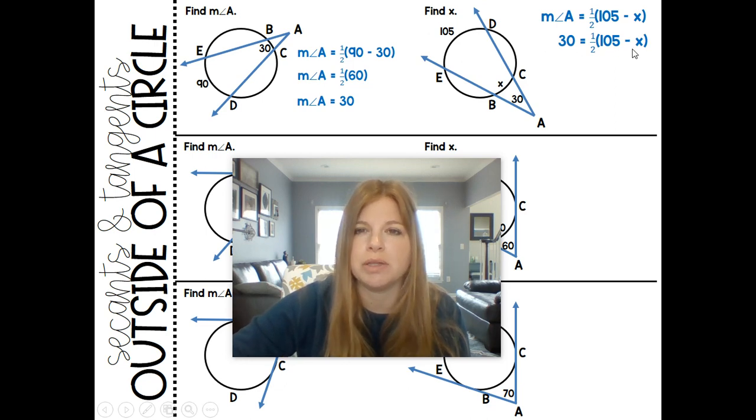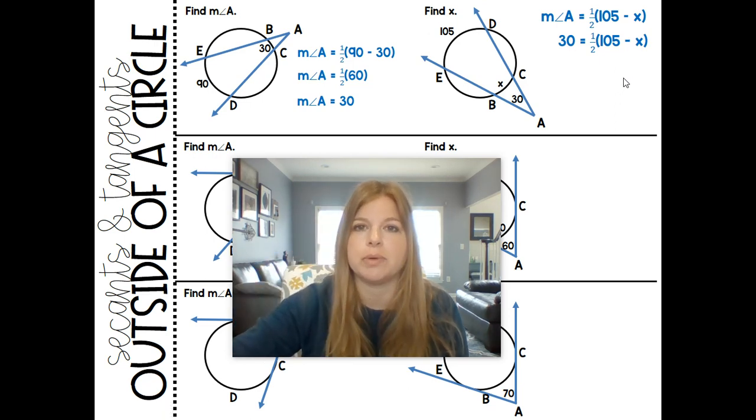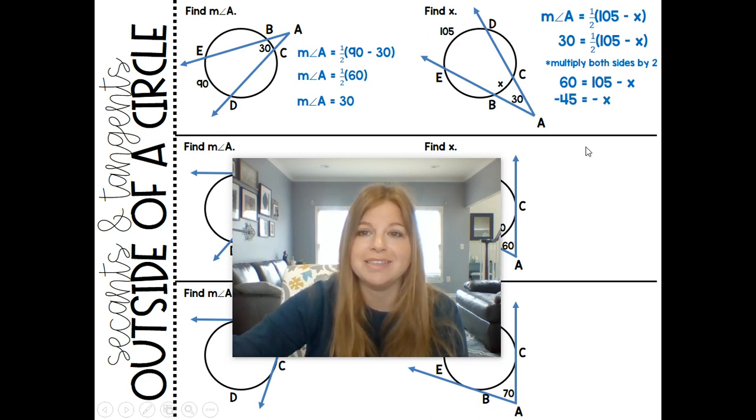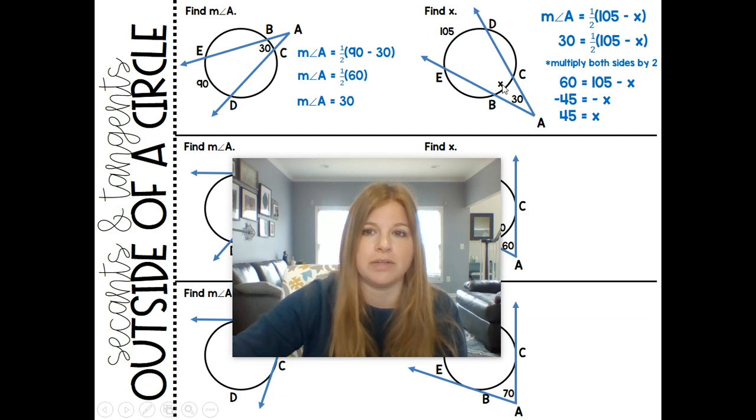Now at this point, when you plug those values in, you could distribute one half, or I like to clear my fractions instead. I'd rather multiply both sides by two, and if I do that, I get 60 equals 105 minus x. Let's subtract 105 on both sides. Let's divide both sides by negative one, and we get x equals 45. And I could test it. I could do 105 minus 45, which is 60. Half of 60 is 30. It works out perfectly.